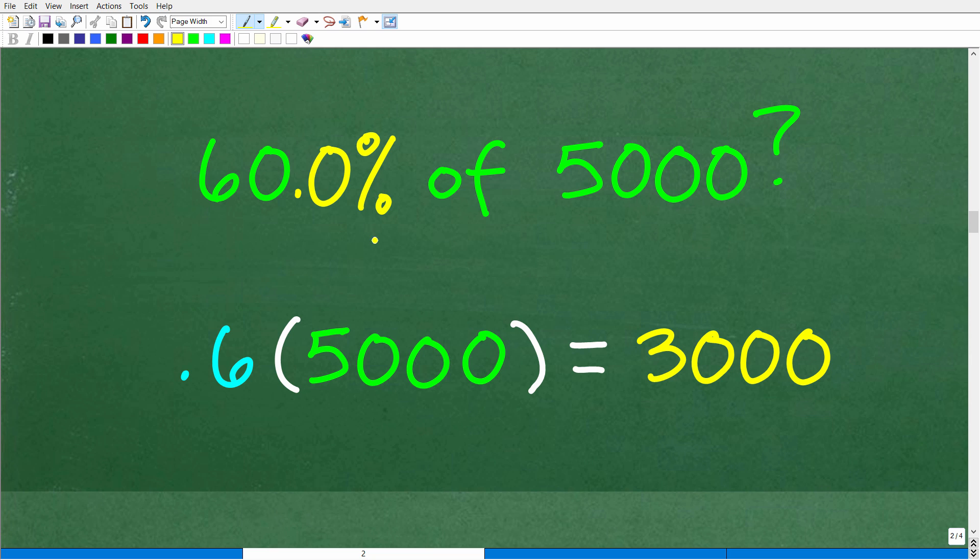So, 60% or 60.0%, you just move the decimal point over two places to the left. But, that is the result of dividing by 100.